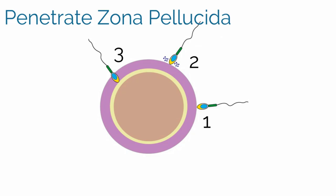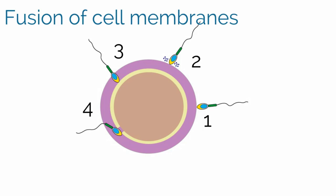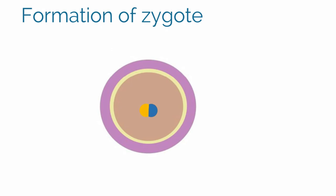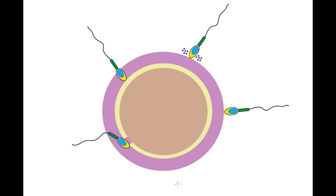These enzymes penetrate the zona pellucida, allowing for the cell membranes of the sperm and egg to fuse. The sperm nucleus and cytoplasm are released into the egg. The haploid nucleus from the sperm undergoes decondensation, becoming the male pronucleus. Completion of the second meiotic division then occurs, producing a female pronucleus of the haploid ovum, and the male and female pronuclei fuse to form a zygote.